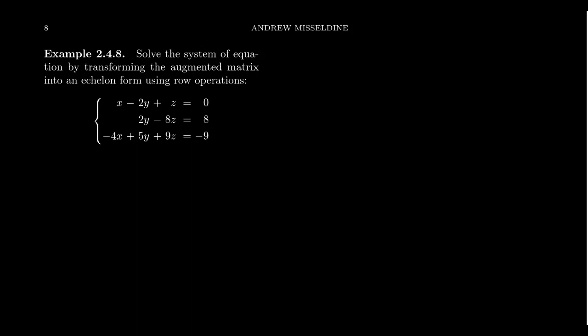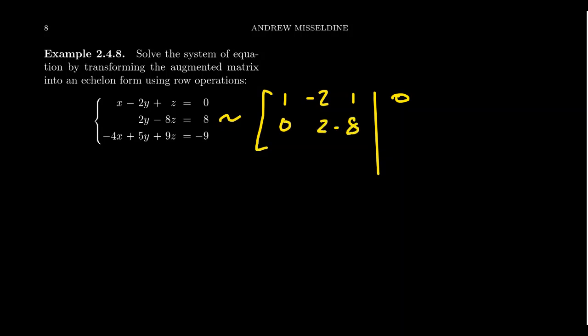Let's consider a three-by-three system of equations: x - 2y + z = 0, 2y - 8z = 8, and -4x + 5y + 9z = -9. The first thing I'm going to do is represent this linear system as an augmented matrix, which gives us: [1, -2, 1 | 0], [0, 2, -8 | 8], [-4, 5, 9 | -9]. Now I'm going to start performing some elementary row operations to this matrix.